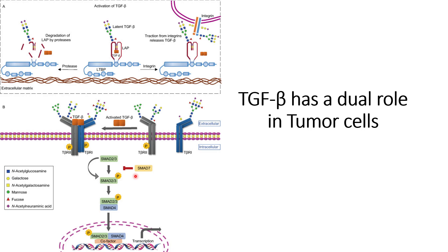However, during the later stage of cancer, a mutation occurs in the SMAD4 gene, which disrupts this signaling pathway. This disruption leads to a signaling outcome that promotes pro-tumorigenic factors such as metastasis of the cells.